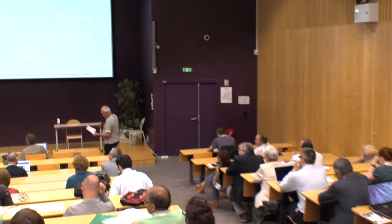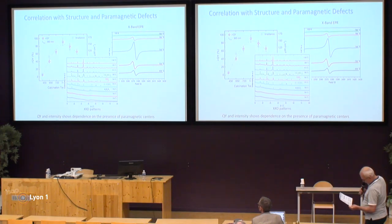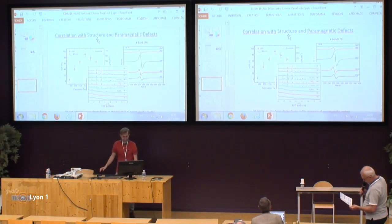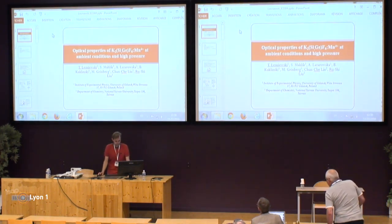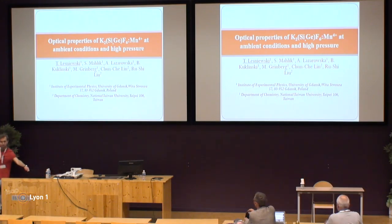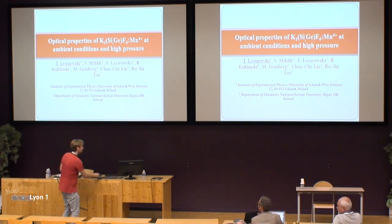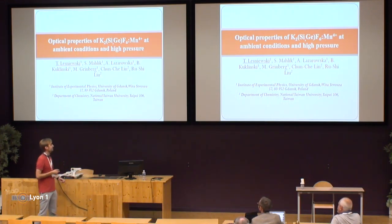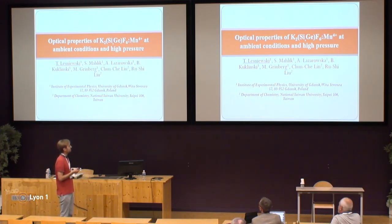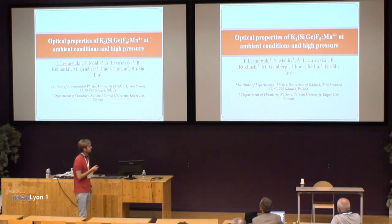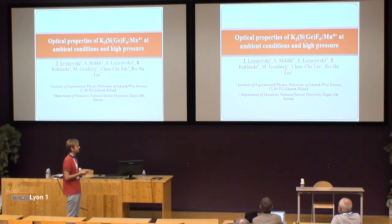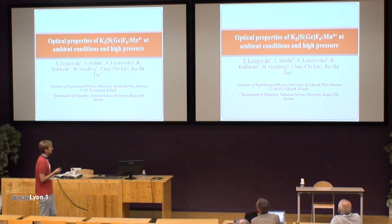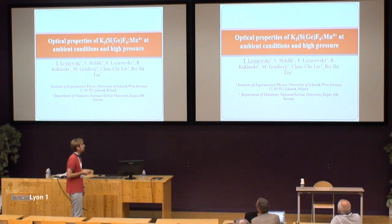We have the last talk given by Dr. Lesniewski on optical properties of something which looks very complicated — fluoride doped with manganese 4+, at ambient conditions and high pressure. I will be talking about optical properties of potassium hexafluoride silico-germinates. The name is quite a mouthful, so I will use abbreviations like KSF or KGF instead. They are all doped with manganese 4+, and I will talk about their optical properties and the impact of high pressure on this group of crystals.